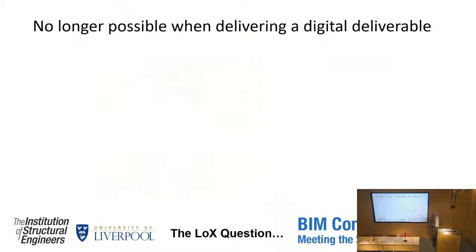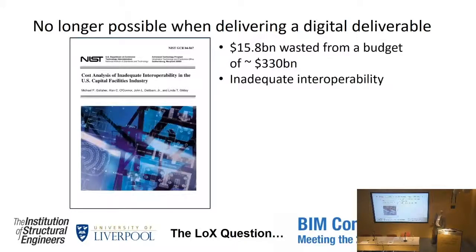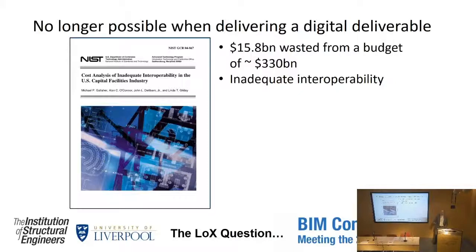The problem is when we get to a digital deliverable and people are exchanging data and using that data directly to build on, we cannot be ambiguous anymore. We need to be absolutely crystal clear on what we ask for. There are a lot of industry reports about the client losing money through inadequate interoperability. A report published around 2006 by the National Institute of Standards and Technology in the US estimated $15.8 billion was wasted from a roughly $330 billion budget every single year through what they termed inadequate interoperability.